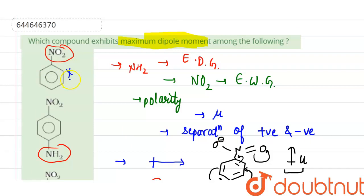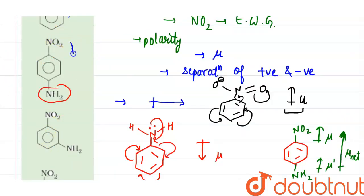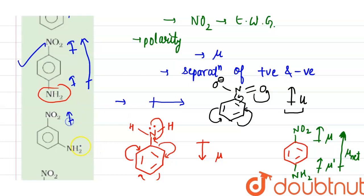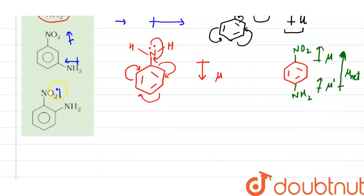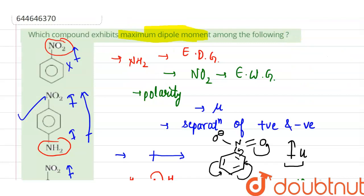Nitrobenzene does not exhibit the maximum dipole moment because it only shows resultant in one direction on one side. In para-nitroaniline, the net resultant dipole moment has contributions from both groups acting together, making it the compound that exhibits the maximum dipole moment. Option 3 and option 4 show less dipole moment compared to compound 2.